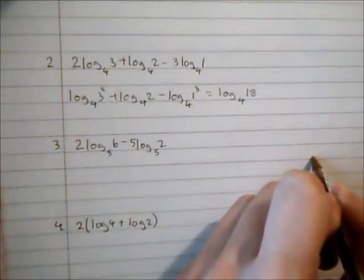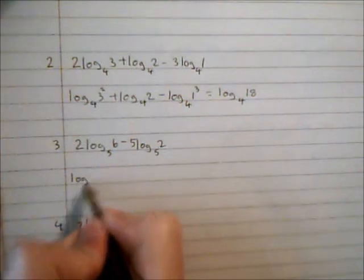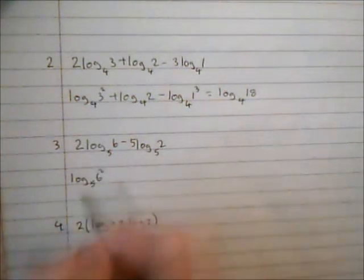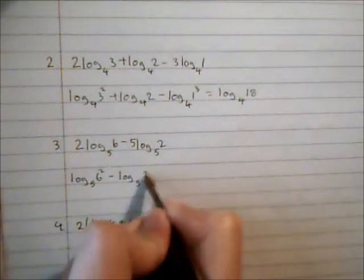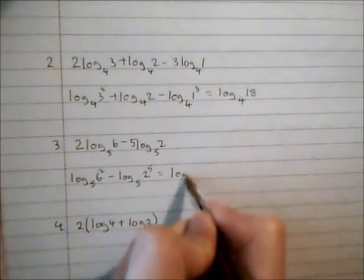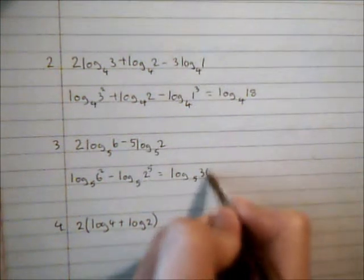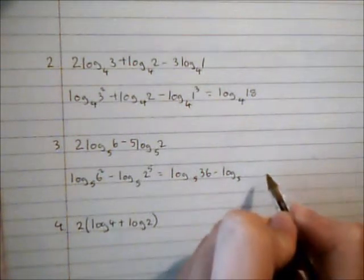This third one I'm going to go through the same process again. I'm going to write it as log₅(6²) - log₅(2⁵). That's the same as log₅36 - log₅32.